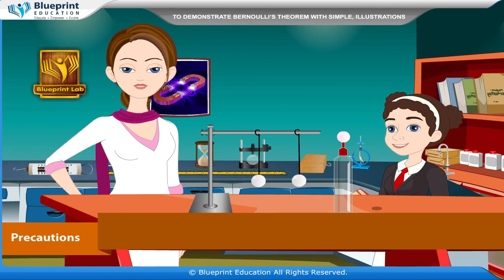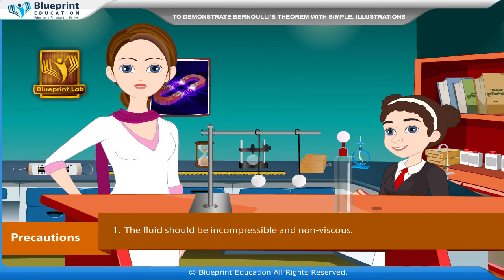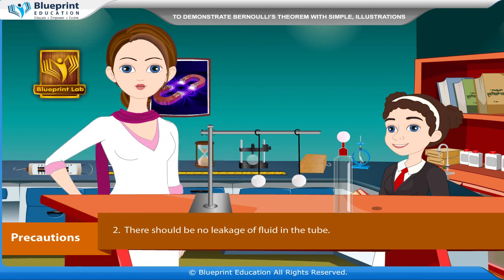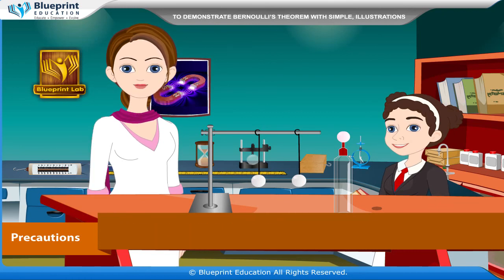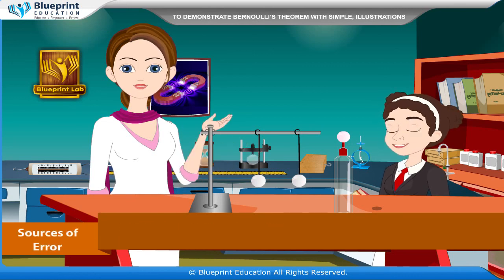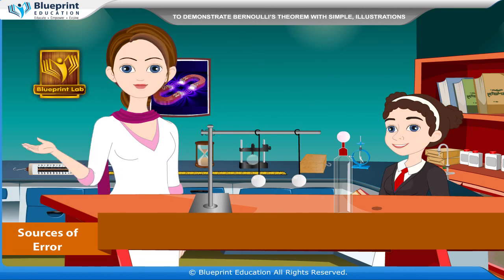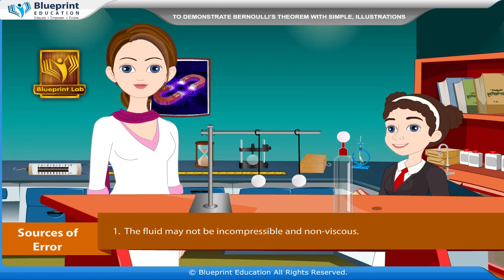Precautions: The fluid should be incompressible and non-viscous. There should be no leakage of fluid in the tube. The space between two bobs should be small. The bobs should not touch each other, and the bobs should be at the same height. Sources of Error: The fluid may not be incompressible and non-viscous, and the bobs of the pendulum may not lie at the same height.